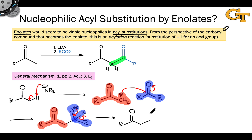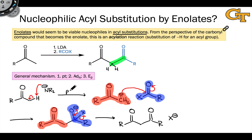This gives us the neutral dicarbonyl product and expels X minus as a leaving group. Provided X minus is more stable than the enolate, this overall mechanism — proton transfer to generate the enolate quantitatively, followed by nucleophilic addition to the polarized CO pi bond and beta elimination to expel the leaving group and reestablish the carbonyl — looks like it should work beautifully.